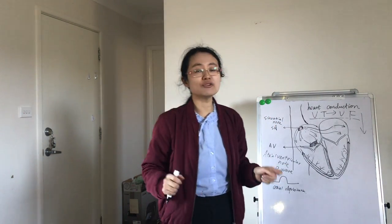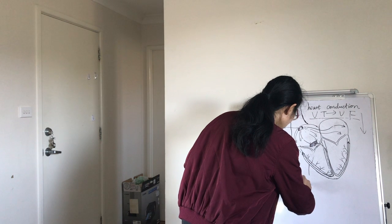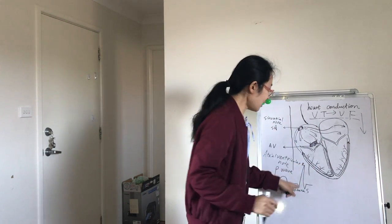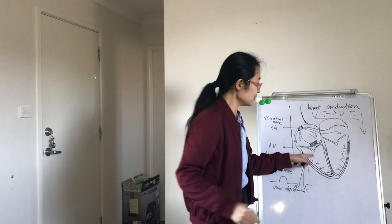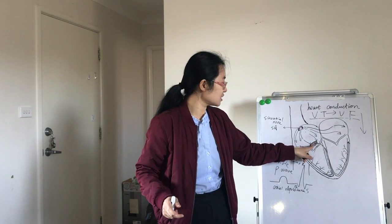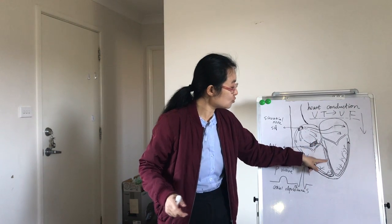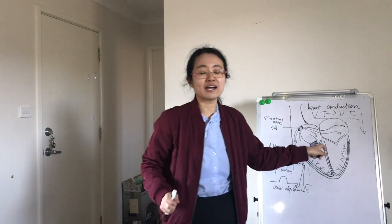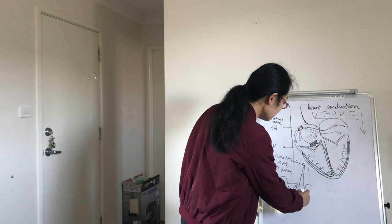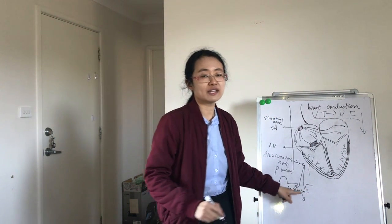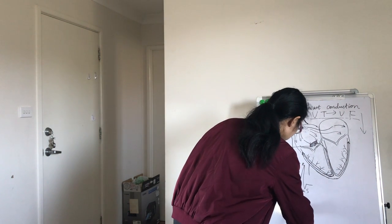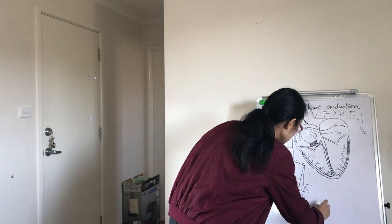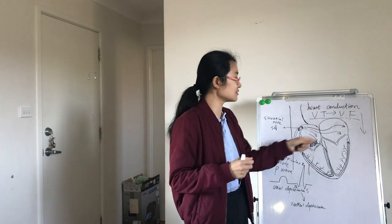The second wave is the QRS wave. The QRS wave represents the electrical signal sent down from the AV node to the ventricles through the His-Purkinje system to let the ventricles depolarize and contract. So the QRS wave represents ventricular depolarization.